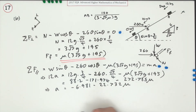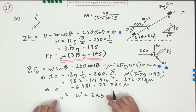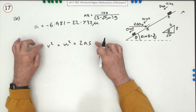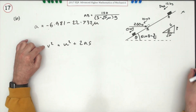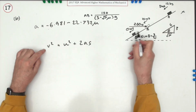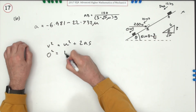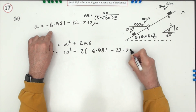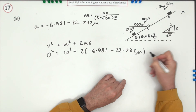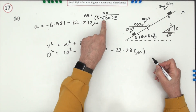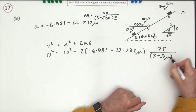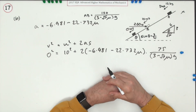Using v² = u² + 2as again: final velocity is 0, initial velocity is 10 m/s, and the stopping distance is half of AB, which is 75 / [g(3 − √7 μ)]. So: 0 = 100 + 2 × (−6.981 − 22.732μ) × 75 / [g(3 − √7 μ)]. That substitution earns the mark.